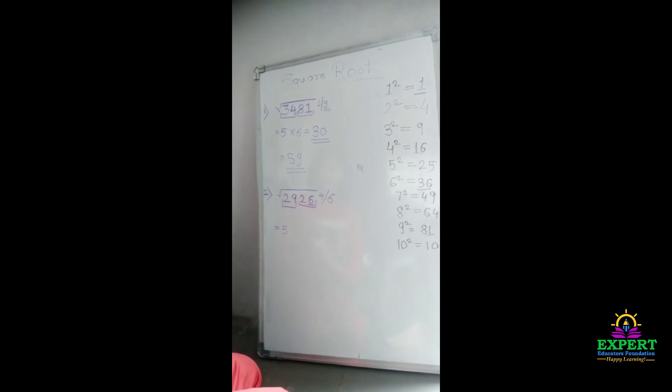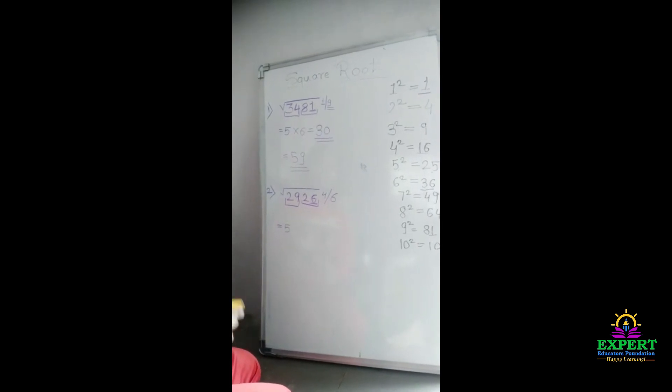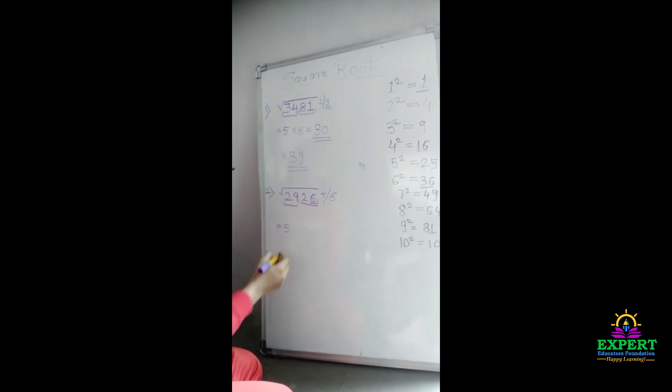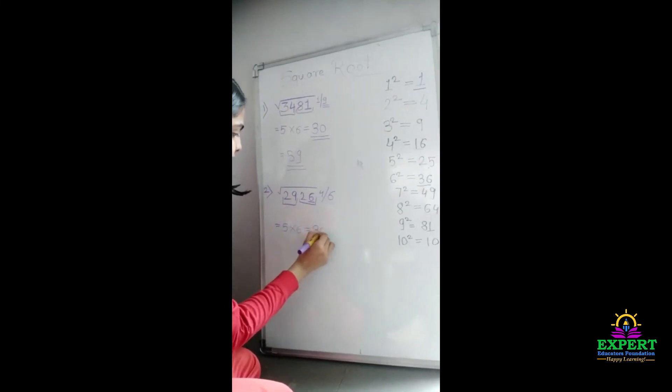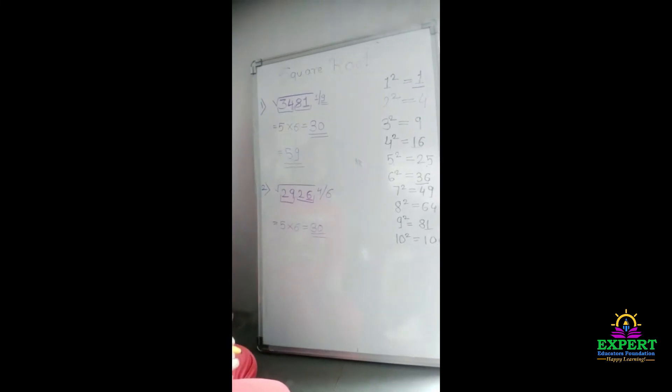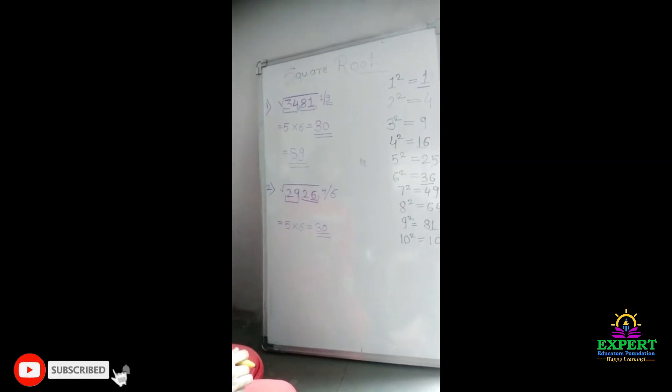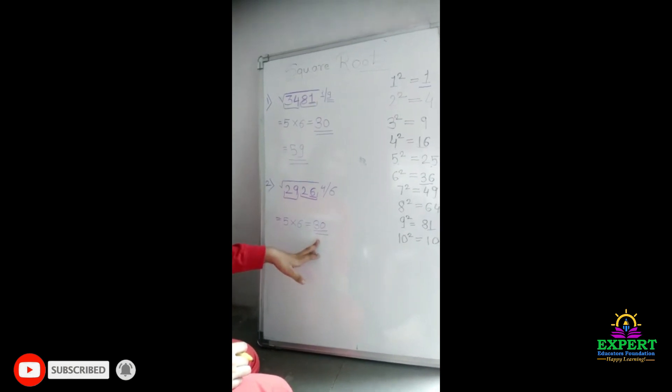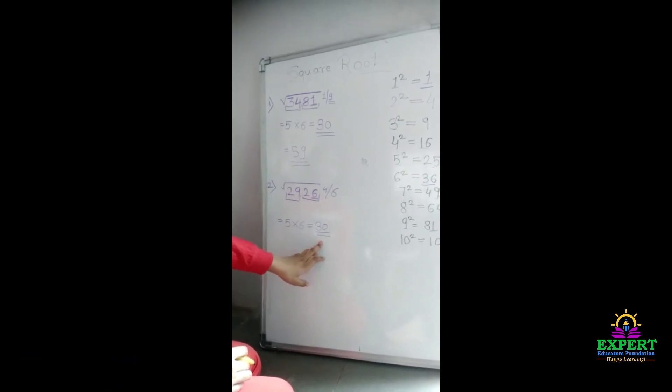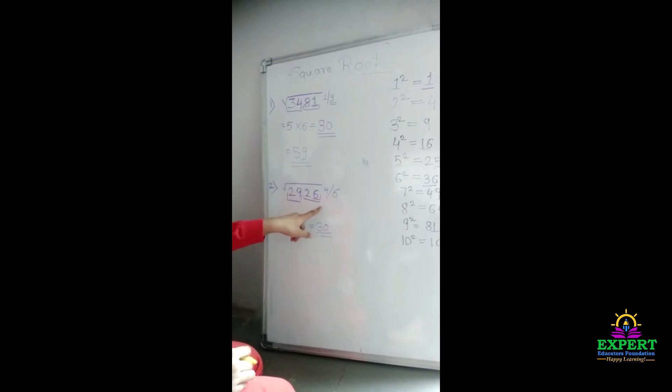Now, we will multiply 5 to its next number which is 6. 5, 6 are 30. Now, we will see our product and the number which is bigger. So, by finding this, we got the product is bigger. So, we have to take small number which is 4.